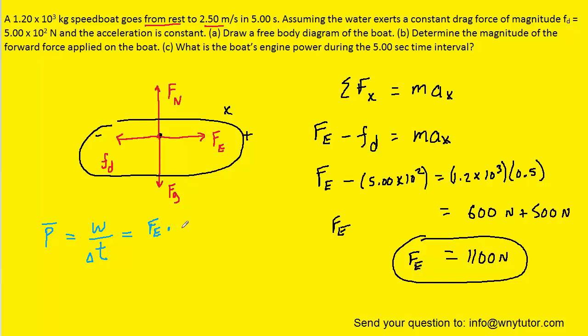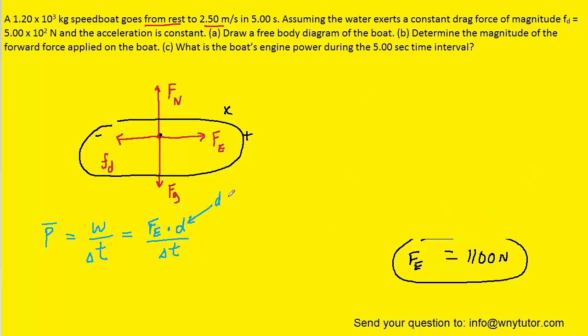For the displacement, we can turn back to kinematics and find that. We know that displacement is equal to initial velocity multiplied by time plus one half times the acceleration times time squared.